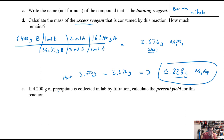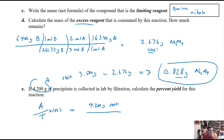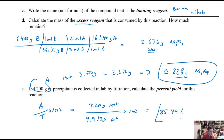Last one — percent yield. Percent yield = (actual yield / theoretical yield) × 100%. The actual yield given is 4.200 g of precipitate; the theoretical yield from above is 4.913 g. So: 4.200 ÷ 4.913 × 100% = 85.49%. That's a pretty efficient reaction.